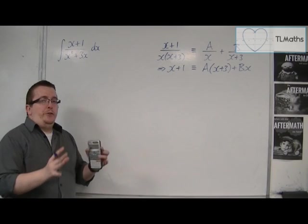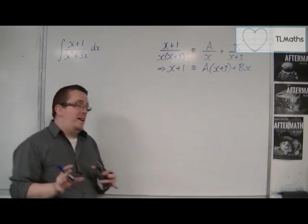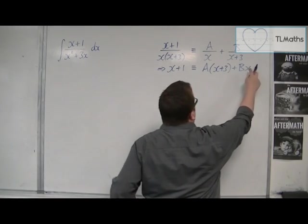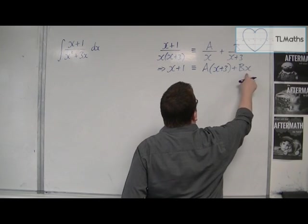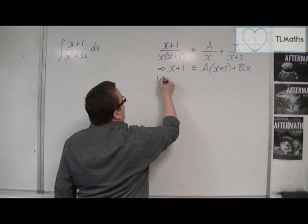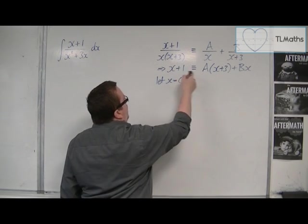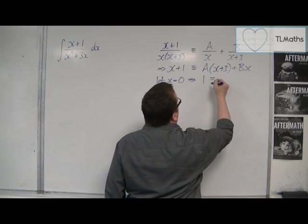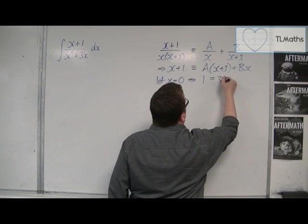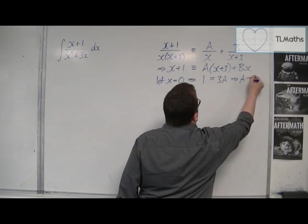Now I want to choose values of x that are going to eliminate the brackets. Now, there's only one bracket there, but obviously there's one here as well. We just don't bother writing it. So let x be equal to 0 first. And so we're going to get 1 on the left-hand side is the same as 3a. And so a would have to be 1 third.